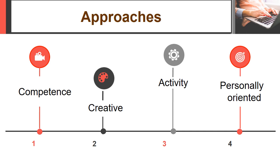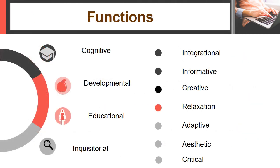For the formation of a literary and information competent personality, the following approaches were used during the experiment: competence, creative, activity, and personally oriented. The functions of formation of literary and information competent personality are cognitive, developmental, educational, and inquisitorial, as well as integrational, informative, creative, etc.